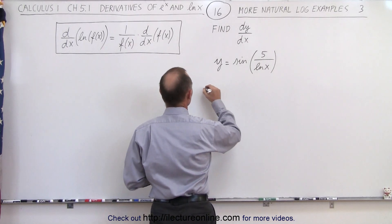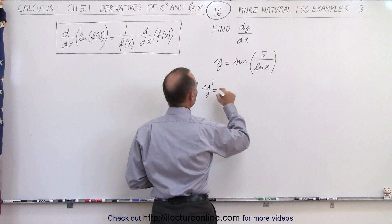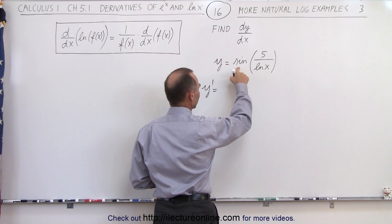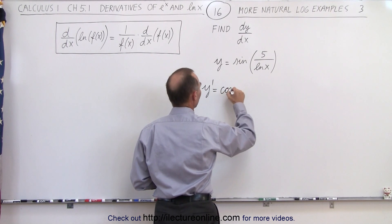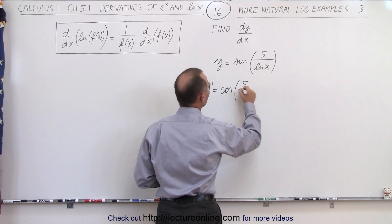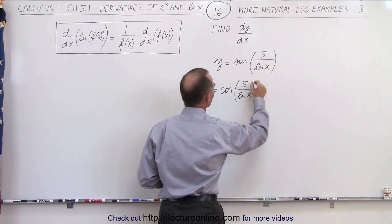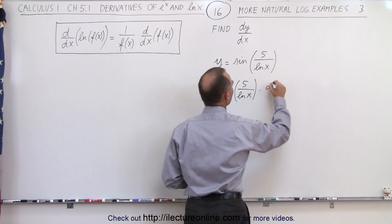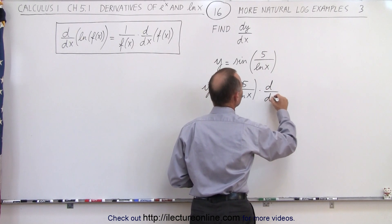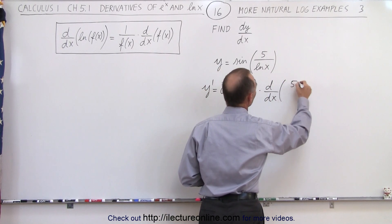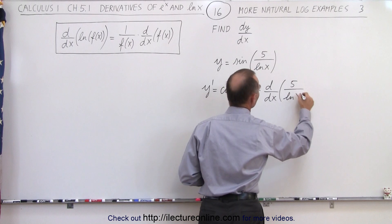So this is what it would look like. We have y prime is equal to, first we take the derivative of the sine, which becomes the cosine of the angle, 5 over the natural log of x, times the derivative of the angle, the d dx of 5 divided by the natural log of x.